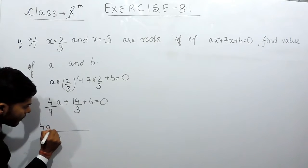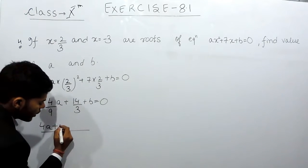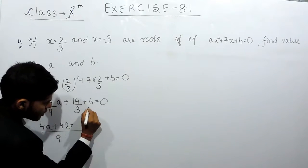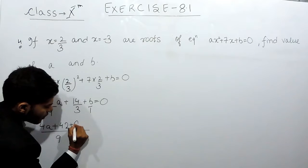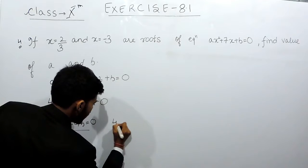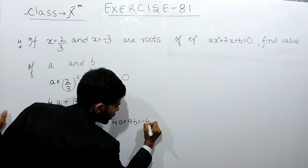4a plus 3, 3 times, so 14, 3 times is 42 plus 1, 9 times, 9b equals to 0. So the equation will come out to be 4a plus 9b equals to minus 42. This is the first equation.